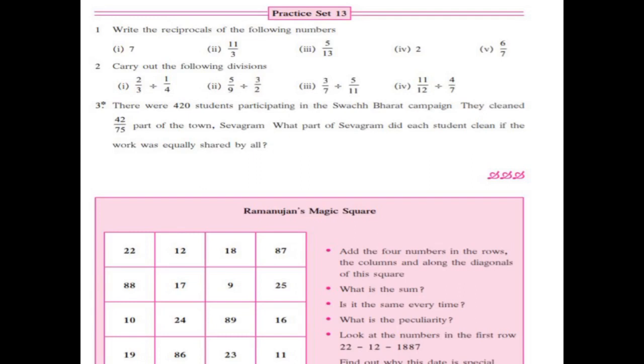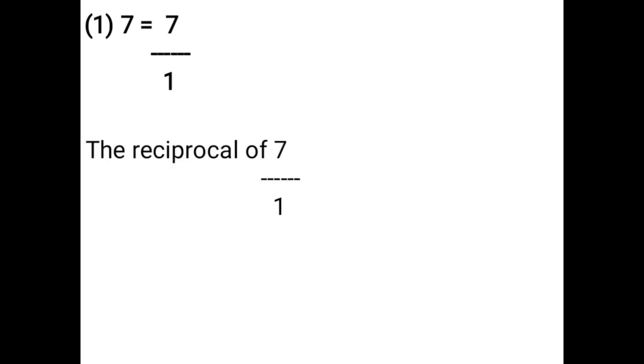Write the reciprocals of the following numbers. First one: 7. This number has no denominator, so you take denominator 1, that is 7 upon 1. The reciprocal of 7 upon 1 is 1 upon 7. Reciprocal means: the number on the numerator you write on the denominator, and the number on the denominator you write on the numerator.